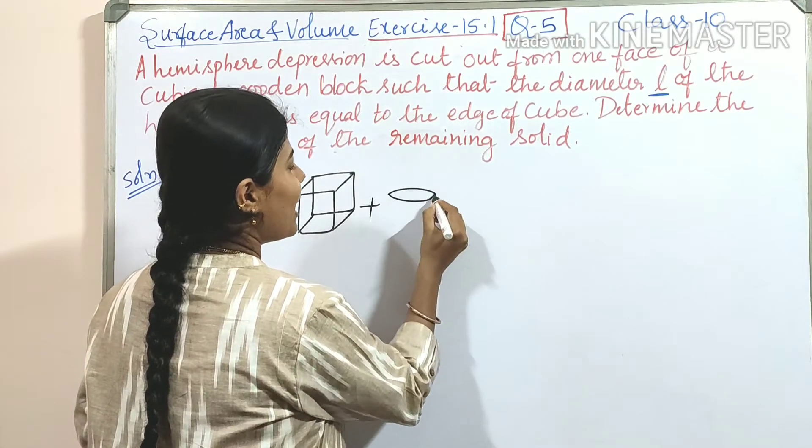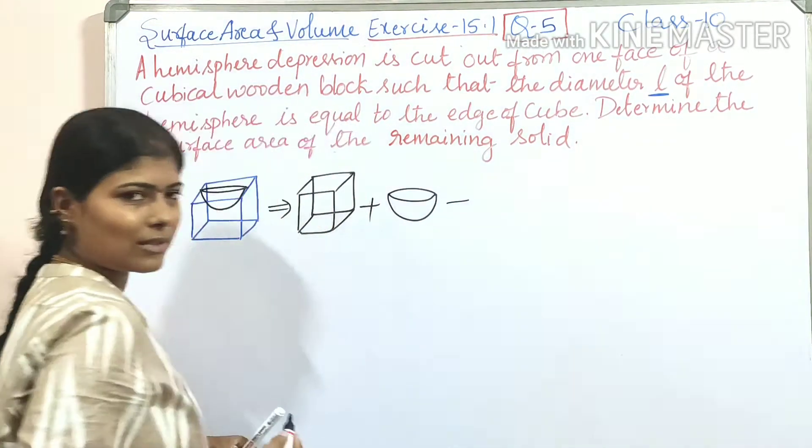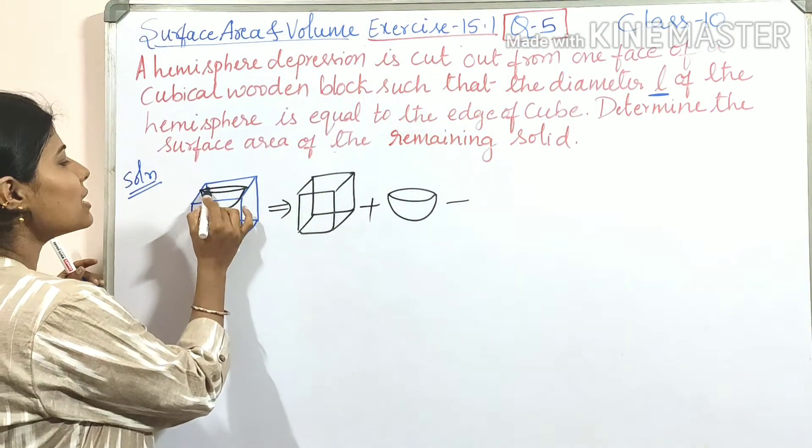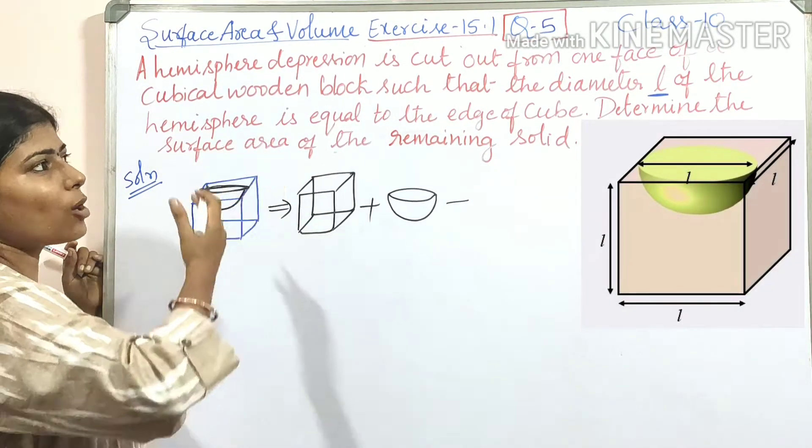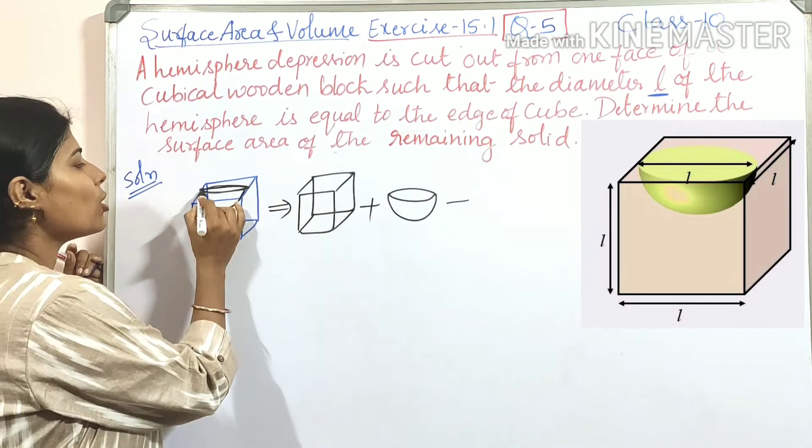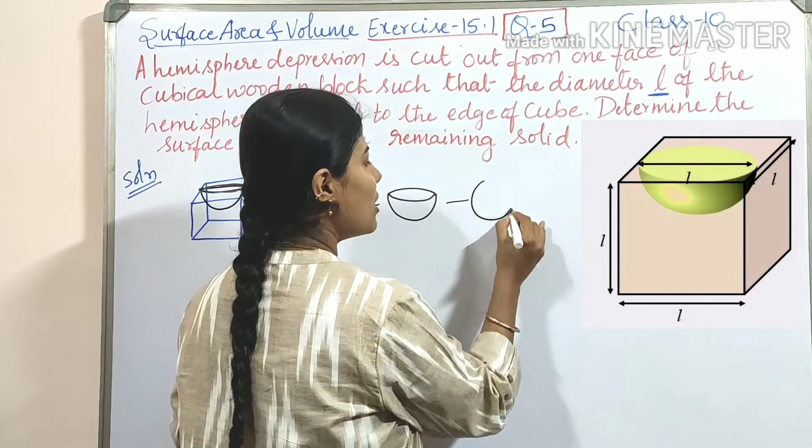So plus area of CSA of hemisphere. But minus, we are not considering the circular base of this hemisphere. Because depression is cut out from one face of the cube. So we are not considering the circular base. So minus circular base.